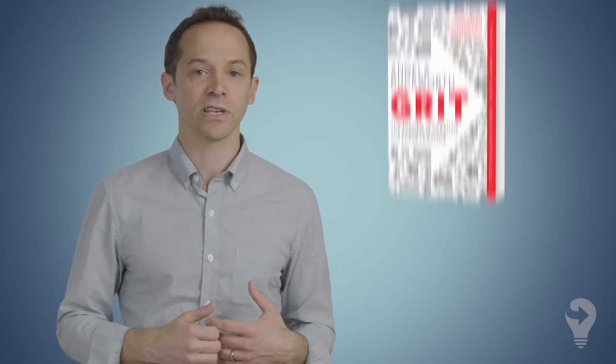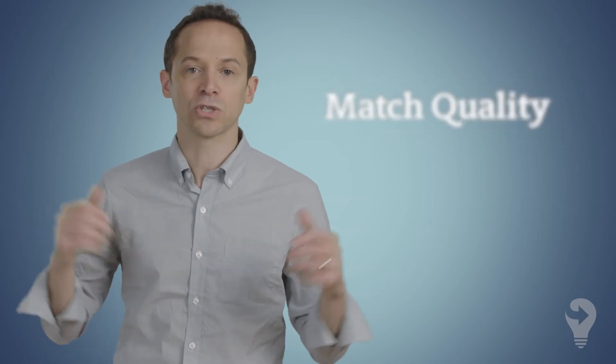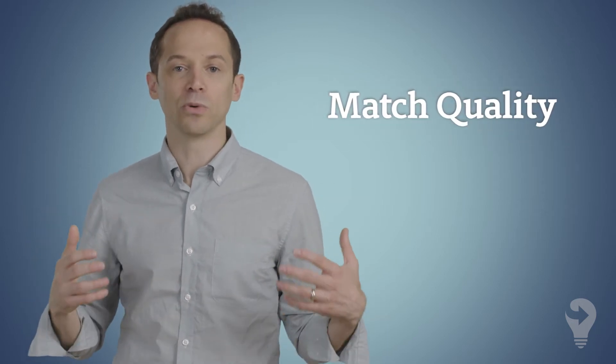With the success of Angela Duckworth's fantastic book, Grit, it's easy to look at van Gogh's winding, failure-laden path and dismiss it as the product of impatience or a lack of perseverance. But in reality, van Gogh was in pursuit of what economists call match quality, the degree of fit between the work someone does and who they are, their interests and abilities.